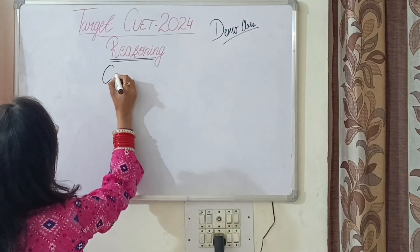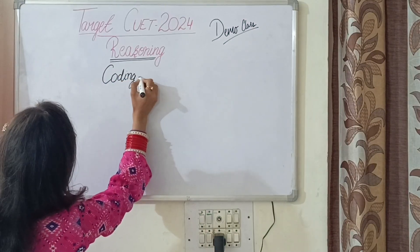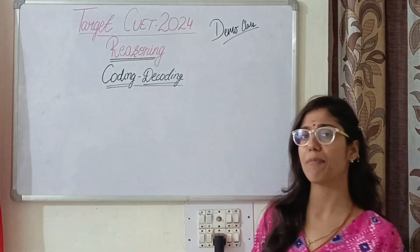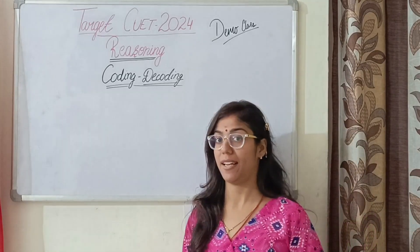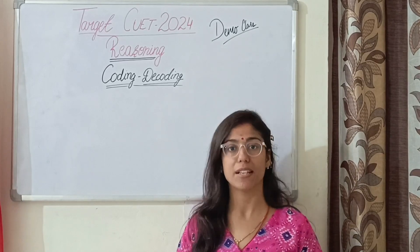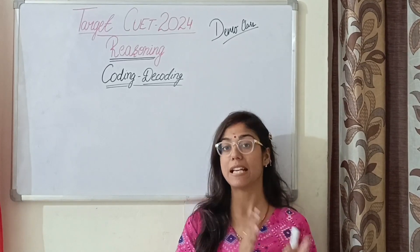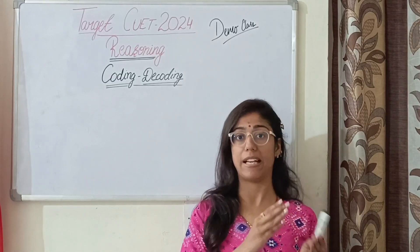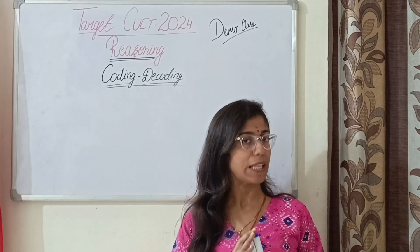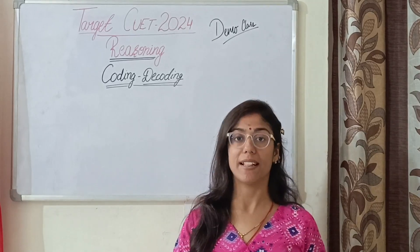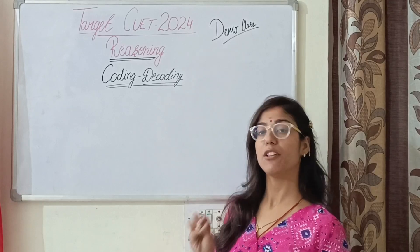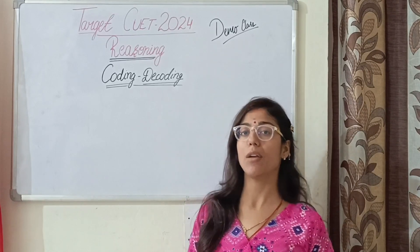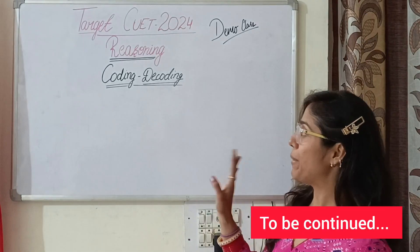Ab hum reasoning mein coding-decoding topic pe aate hain. Coding-decoding mein hum baat karte hain kisi aisi language ki jo humein samajh nahi aati — jaise computer codes ya symbols. Joh input ya language ya symbols hum samajh nahi sakte, use 'code' kehte hain. Jab hum us code ko crack karte hain toh use 'decoding' kehte hain. Yeh hai coding-decoding ka basic concept, aur ab hum details mein jayenge.